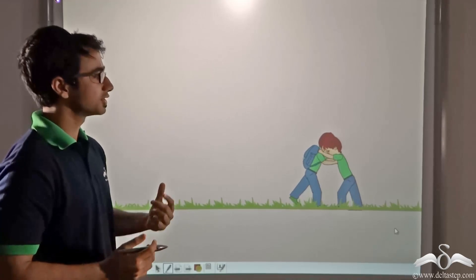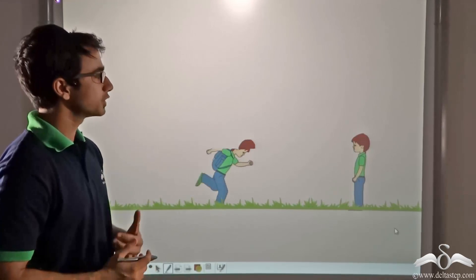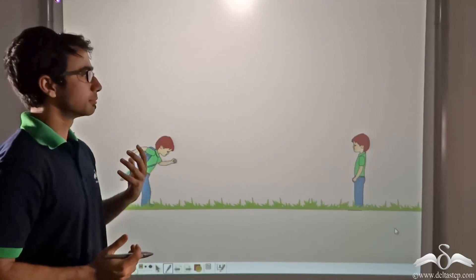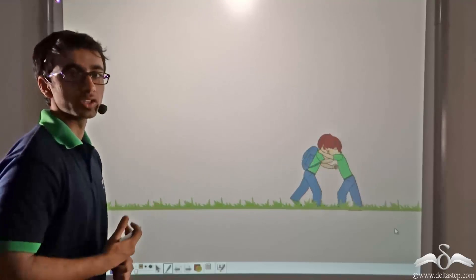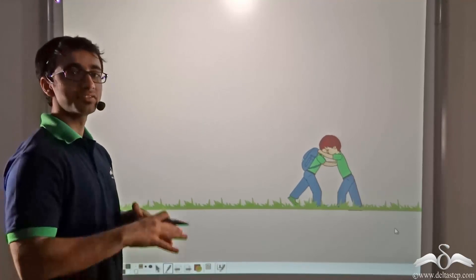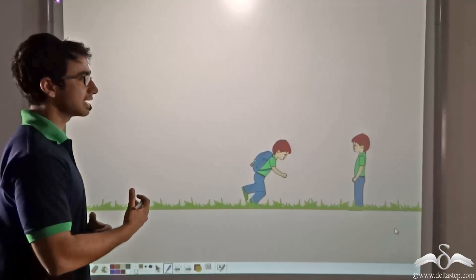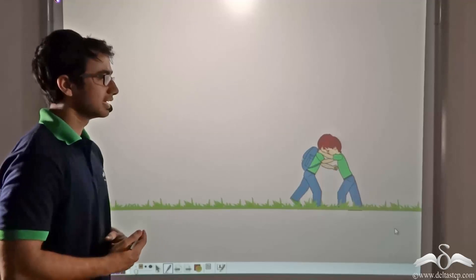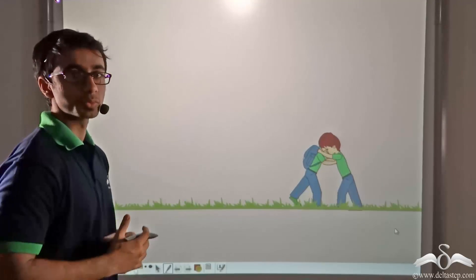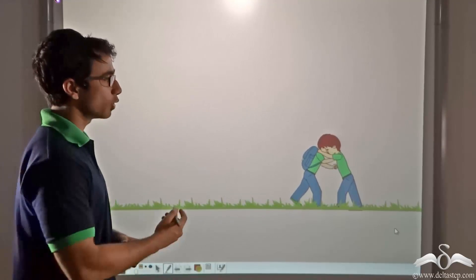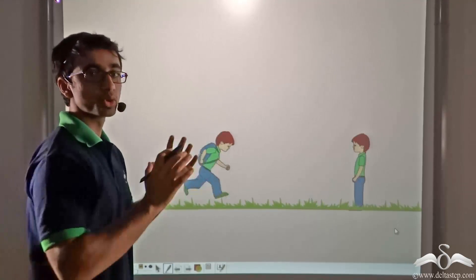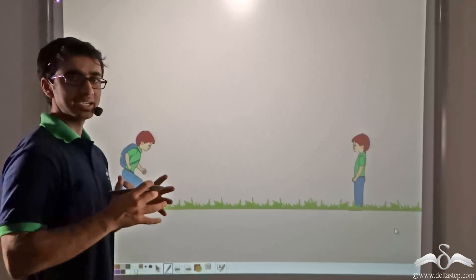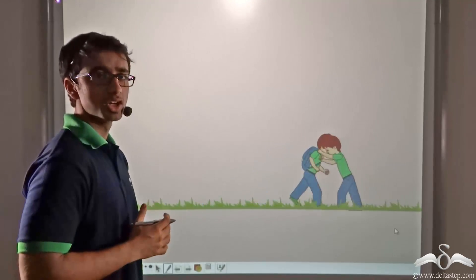Consider the animation being played on the screen. A boy is running with a bag on his shoulders, and his friend wishes to play a prank on him. The friend stands in front of the boy and intercepts his path. So when the boy is running from one end to the other, his friend blocks his way. The boy is unable to run when his friend is applying a resistance — pushing him in the opposite direction.